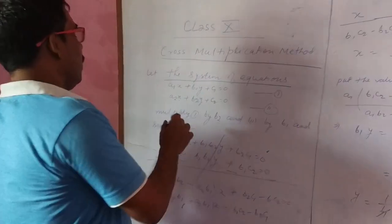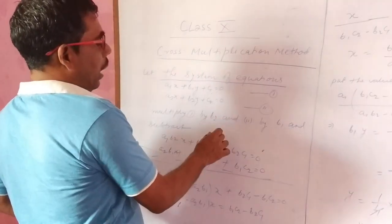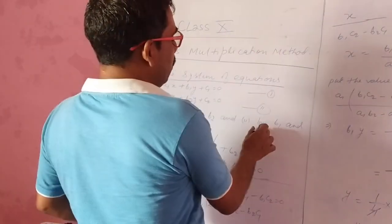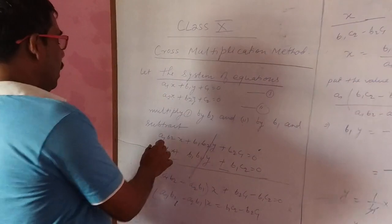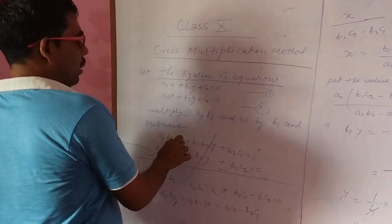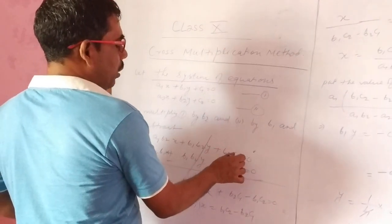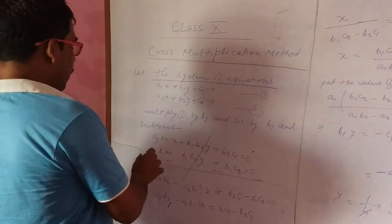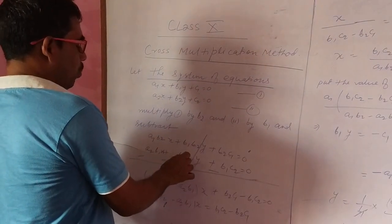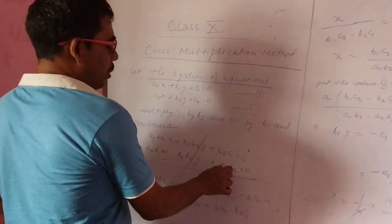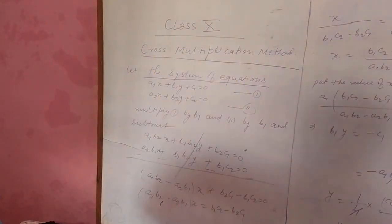After this, in equation number 1, multiply by b2 and equation number 2, multiply by b1 and subtract. Then we get a1b2x plus b1b2y plus b2c1 equal to 0, and a2b1x plus b1b2y plus b1c2 equal to 0. We are taking elimination methods for finding it.